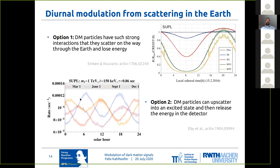The first possibility is to obtain these diurnal modulations from scattering in the Earth, and there are essentially two different ways why this could be interesting. The first option is that dark matter particles actually have quite strong interactions, much stronger than what we normally assume for WIMPs. And if this is the case, you could imagine that dark matter particles actually have a mean-free path which is shorter than the size of the Earth, meaning that they will scatter on the way to the detector in the underground laboratory.